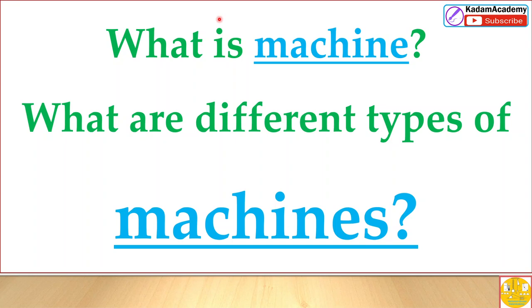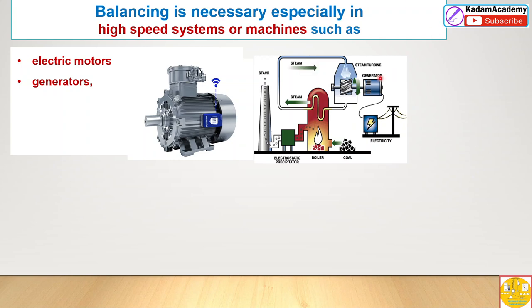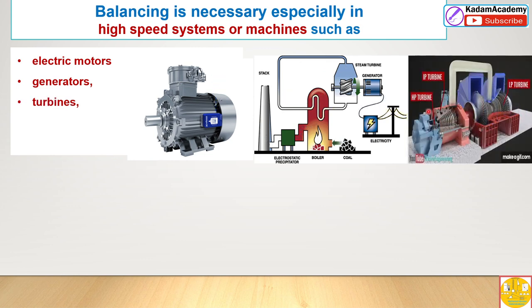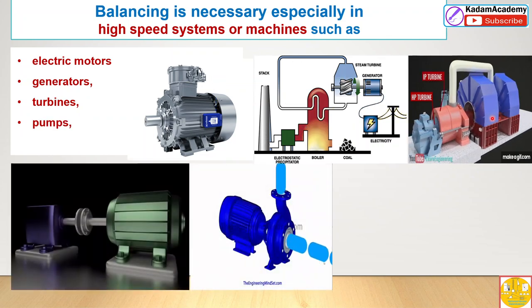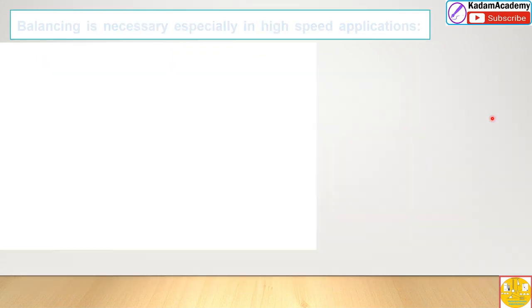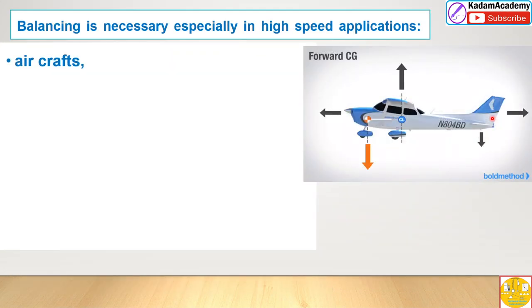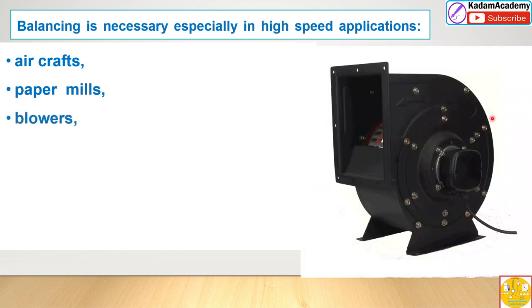We will see the applications of machines where balancing is necessary, especially in high-speed systems such as electric motors, generators, and steam turbines for power generation. Pumps, machine tools, and aircraft are also examples where high-speed applications require balancing.